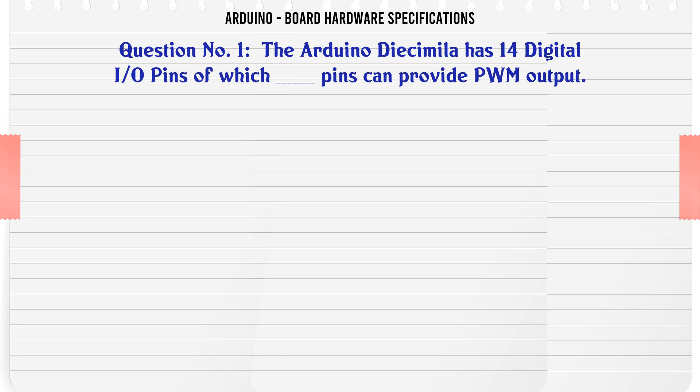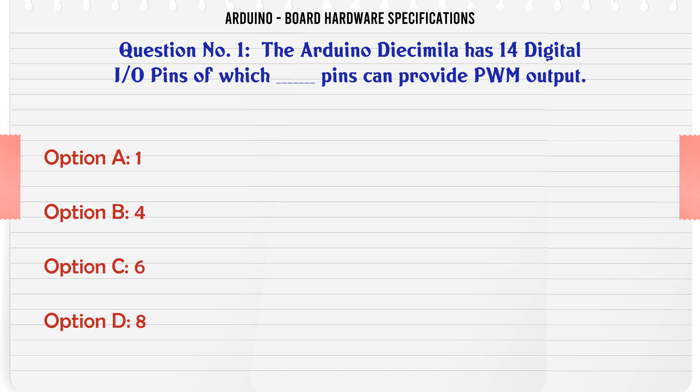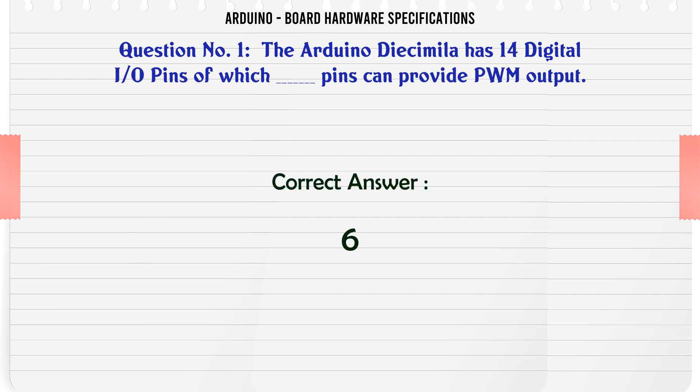The Arduino Daiichi Milla has 14 digital I/O pins, of which how many pins can provide PWM output? A: 1. B: 4. C: 6. D: 8. The correct answer is 6.